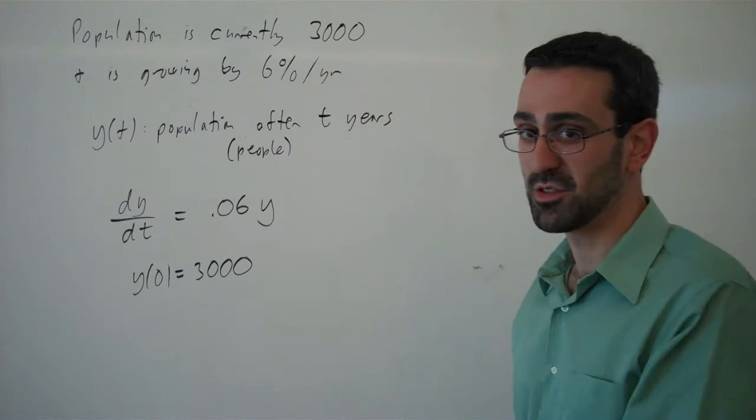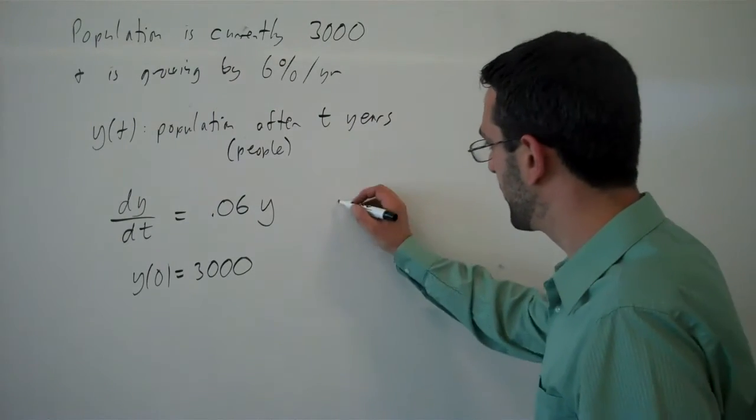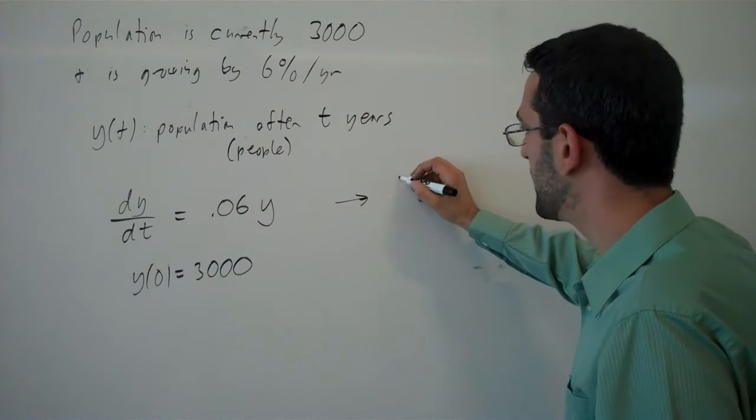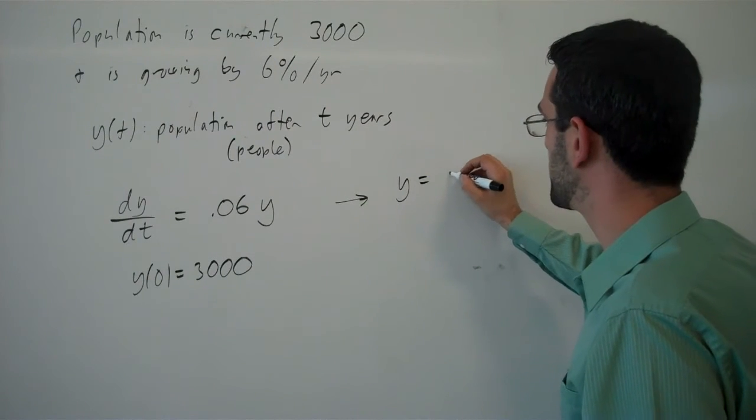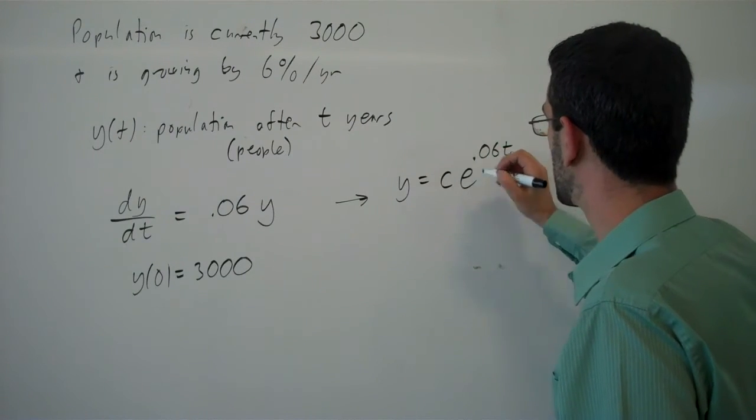You might be able to guess what the solution to this differential equation is. Based on your knowledge of exponential growth, you might have guessed that the solution is ce^(0.06t).